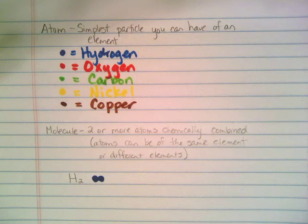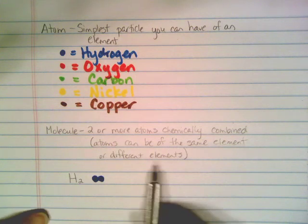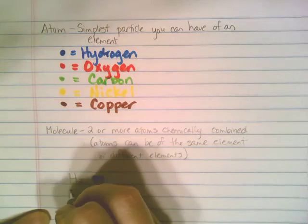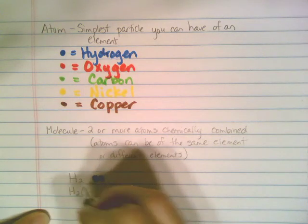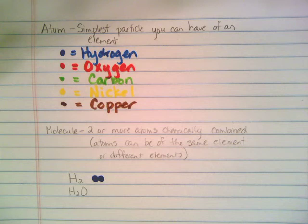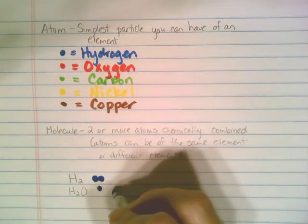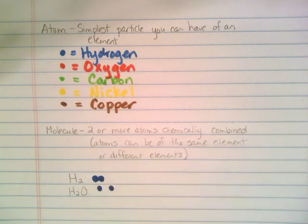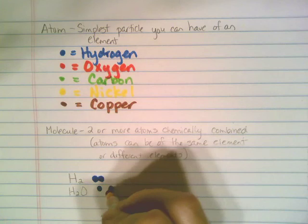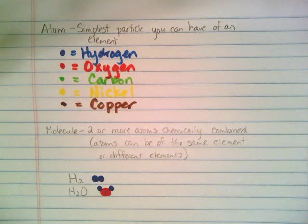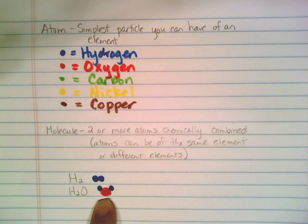You could also have molecules of different elements. The most common example everybody knows is water, H₂O. The drawing of what a water molecule would look like — you'd have your two H's, but then you'd have your oxygen in the middle. Any time you have multiple atoms that are stuck to one another, like you see in the pictures here, that would be called a molecule.